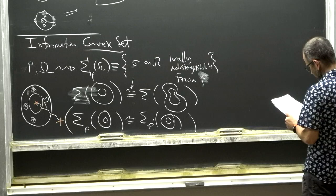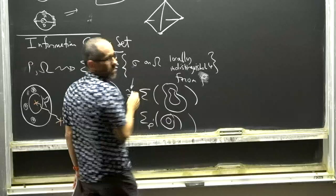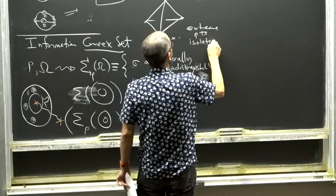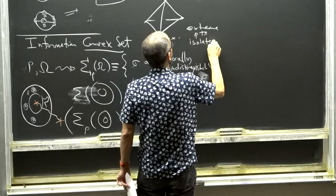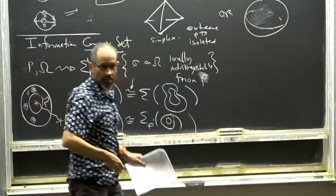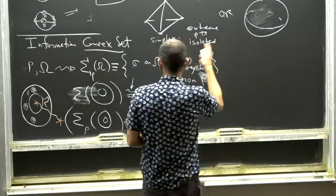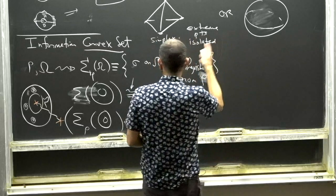What does a convex set look like? There are basically two things it can do. One is it could be a simplex, meaning the extreme points are isolated — you can make an arbitrary point just by taking convex combinations of those isolated extreme points. Or it could look like the Bloch ball — the space of density matrices on a qubit is a ball, its boundary is the Bloch sphere, and in that case the extreme points form the Bloch sphere. These are two very different possibilities, and we'll get different answers for different topologies.